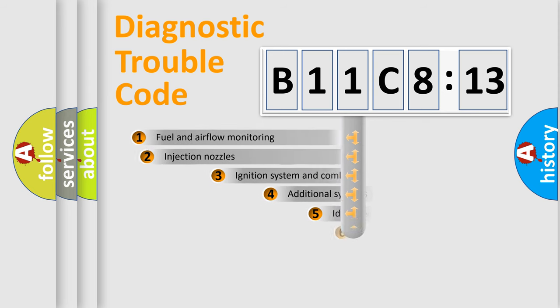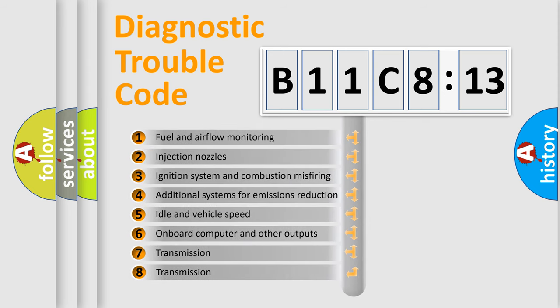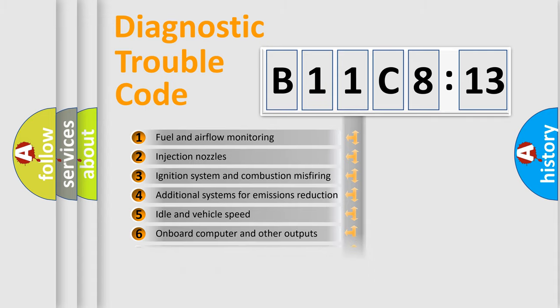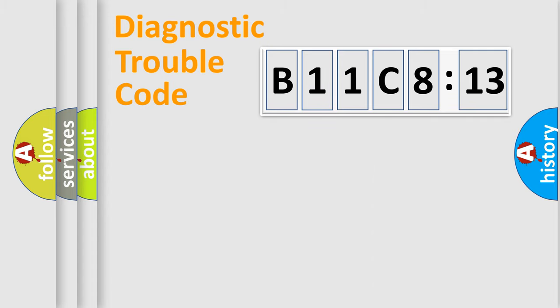The add-on to the error code serves to specify the status in more detail, for example a short to the ground. Let's not forget that such a division is valid only if the second character code is expressed by the number zero.